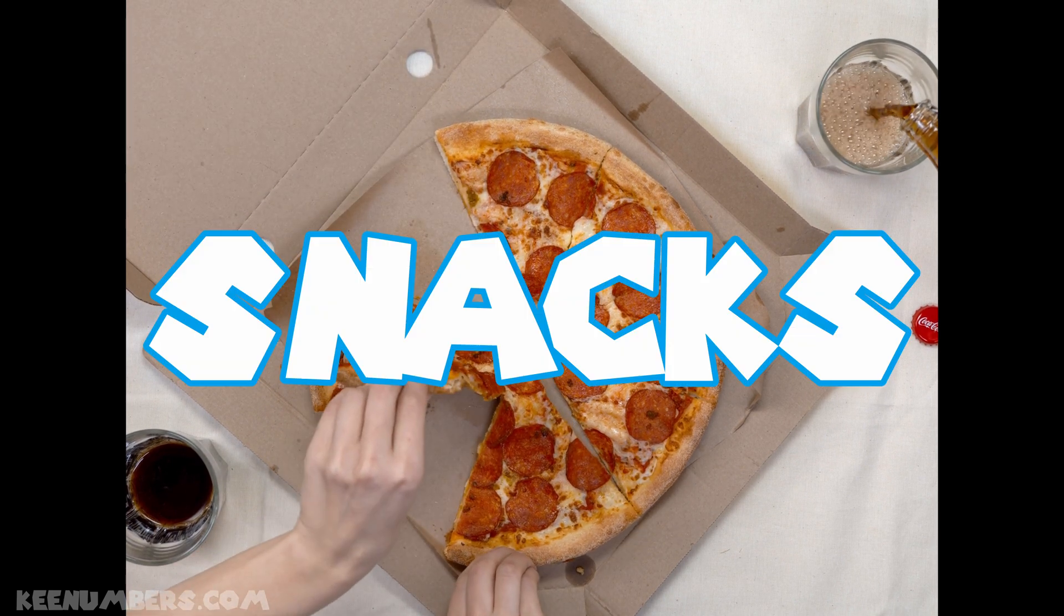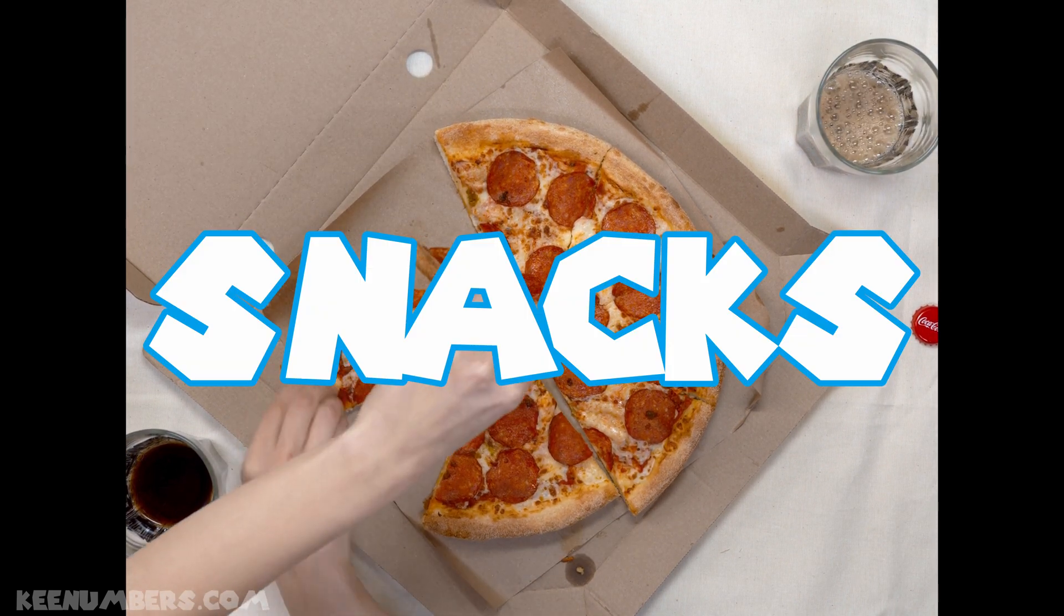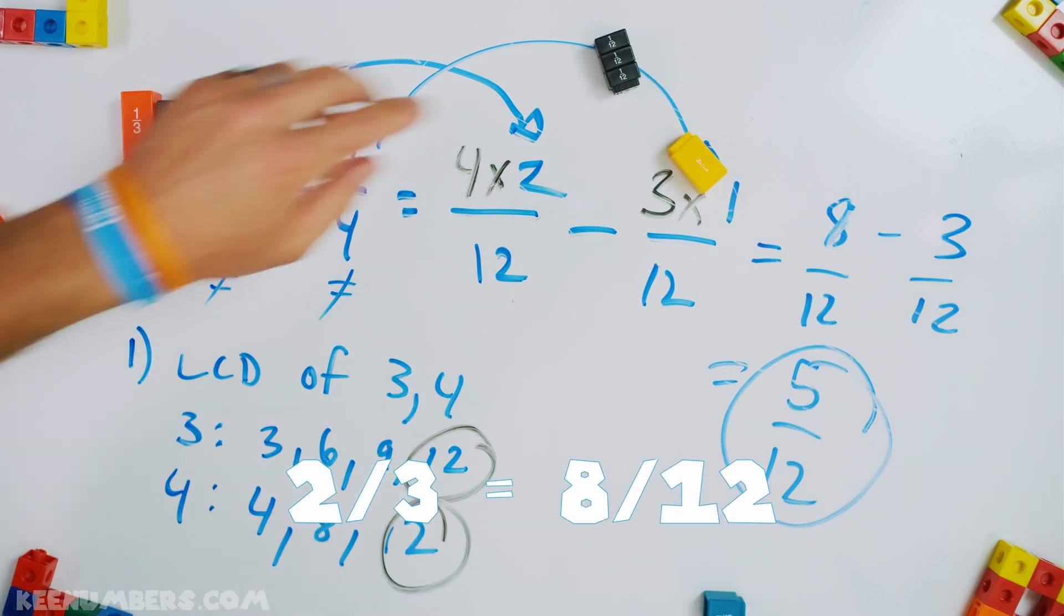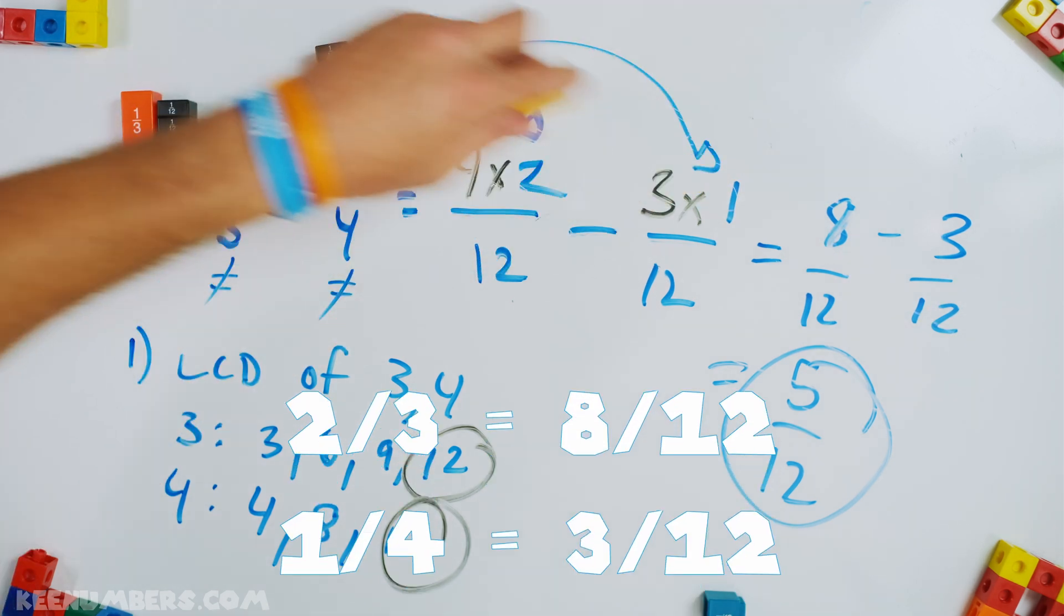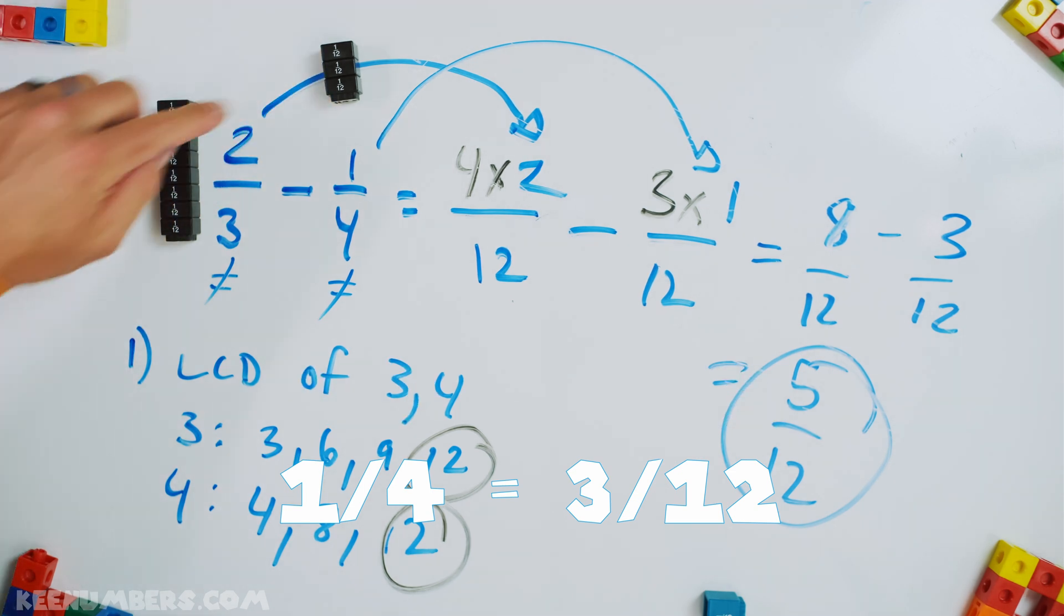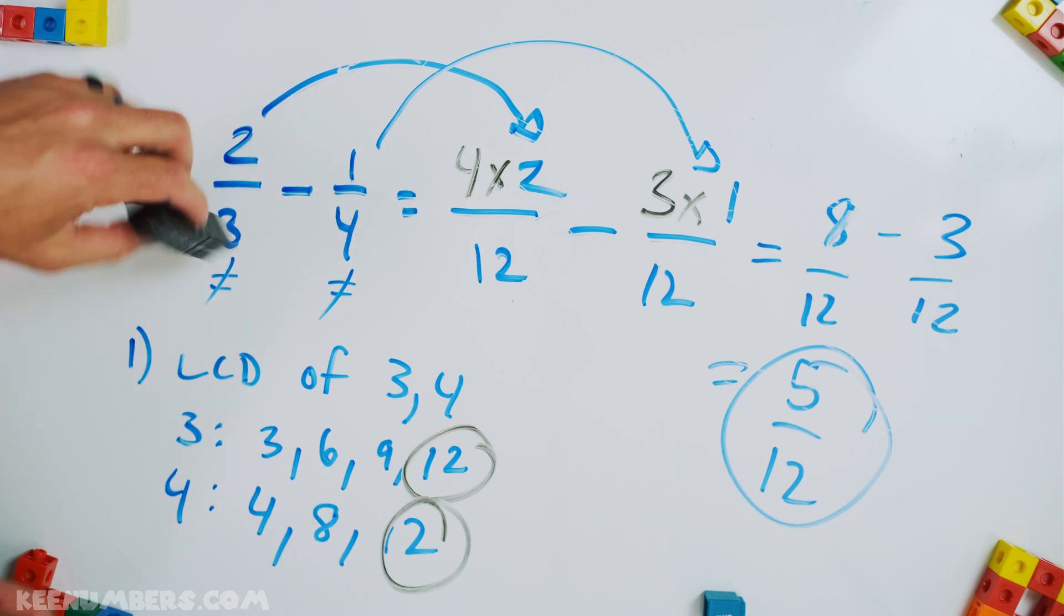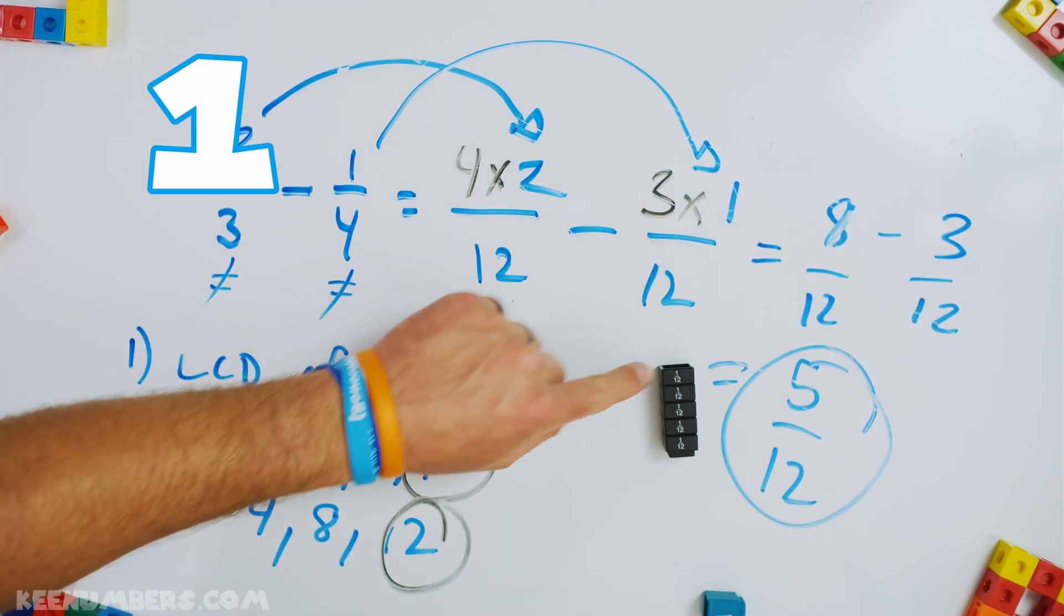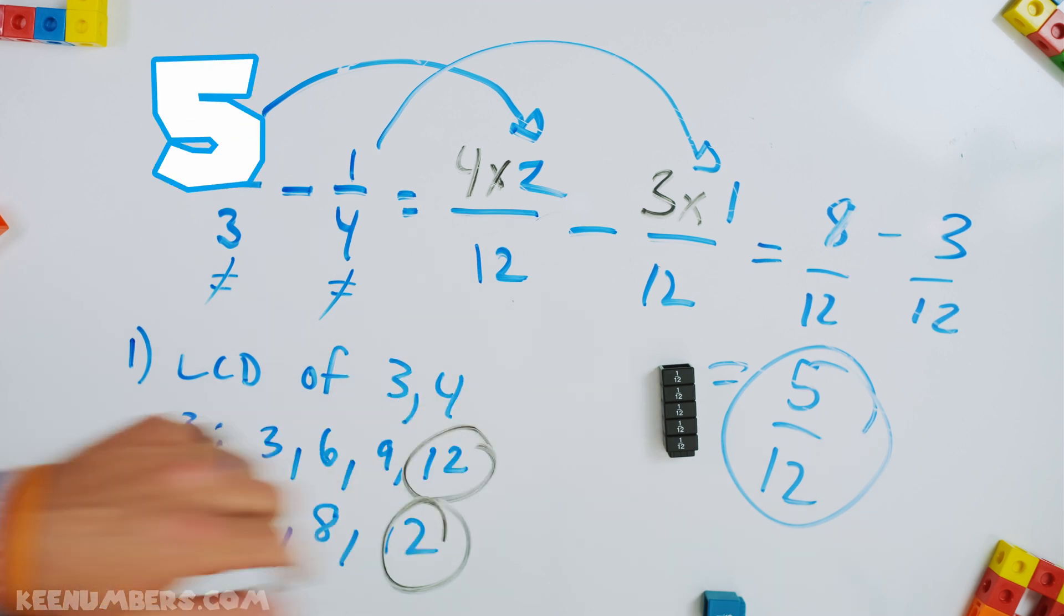This episode is brought to you by Snacks. Don't leave home without them. He's saying two thirds is equal to eight 12ths, and one quarter is three 12ths. So now you're subtracting three 12ths. Take away three 12ths here. And how many 12ths do you have left over? One, two, three, four, five, five 12ths.